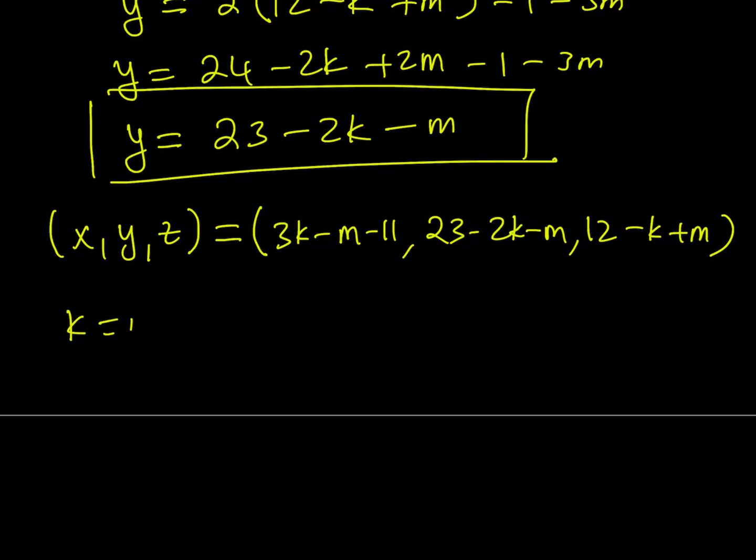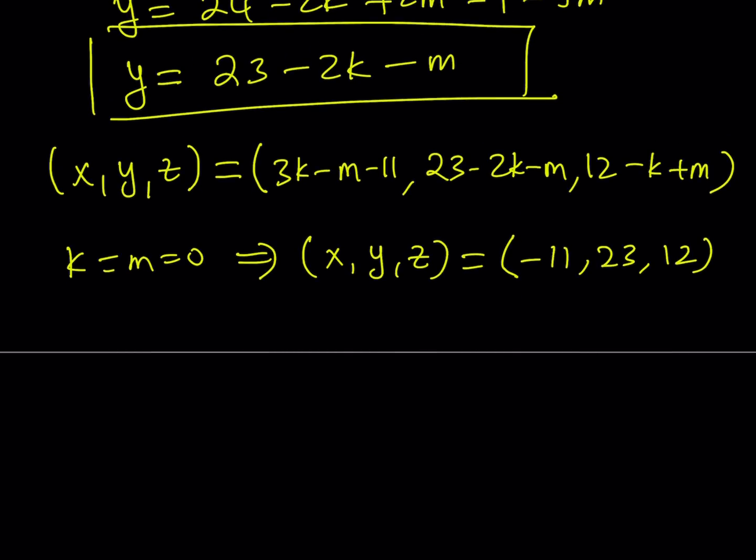Let's look at some specific ones. For example, what if k and m are both 0? You're going to get negative 11, 23, and 12. So you can go ahead and plug these into the original equation. You're going to notice that they satisfy the original one.